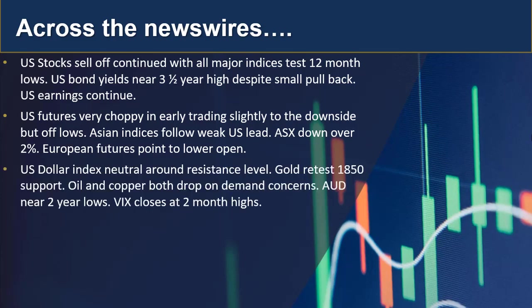Because of that slight pullback in US bond yields, we saw the USD index pull back a little bit from its highs earlier in the session — it's now neutral around a resistance level. Gold fell and retested 1850 support, which is also around where the 200 EMA sits. We saw sell-offs in both oil and copper on demand concerns. The AUD is near two-year lows as commodity-based currencies also underperformed. The VIX closed at two-month highs, not surprisingly, on continued market worries.